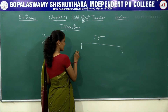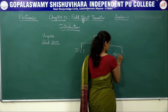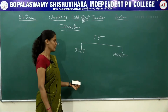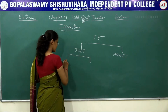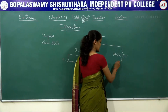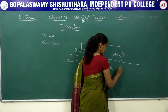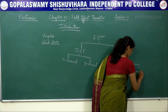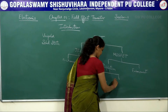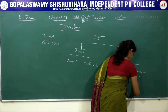This FET is broadly classified into two types. One is JFET, which is called as junction field effect transistor. The other one is MOSFET, that is metal oxide semiconductor field effect transistor, also called as insulated gate field effect transistor. JFET can be classified into two types: N channel JFET and P channel JFET. MOSFET can be classified into depletion type and enhancement type, each further classified into N type and P type.